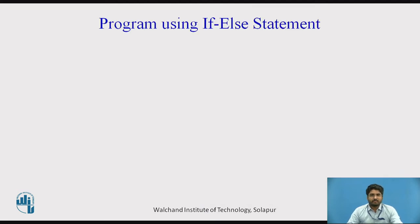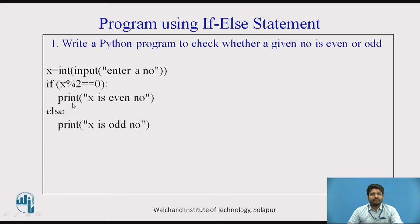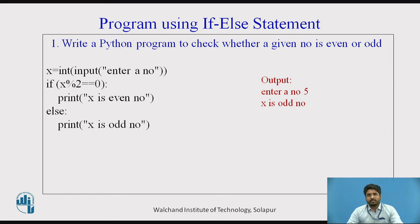We will see programs on if-else. Write a program to check whether a given number is even or odd using if-else. I am taking a variable x as integer input — 'enter a number'. The condition is x mod 2. If the remainder is 0, the condition is true and it prints 'x is an even number'; otherwise it prints 'x is an odd number'. If the user enters 5, the output shows 'x is an odd number'.